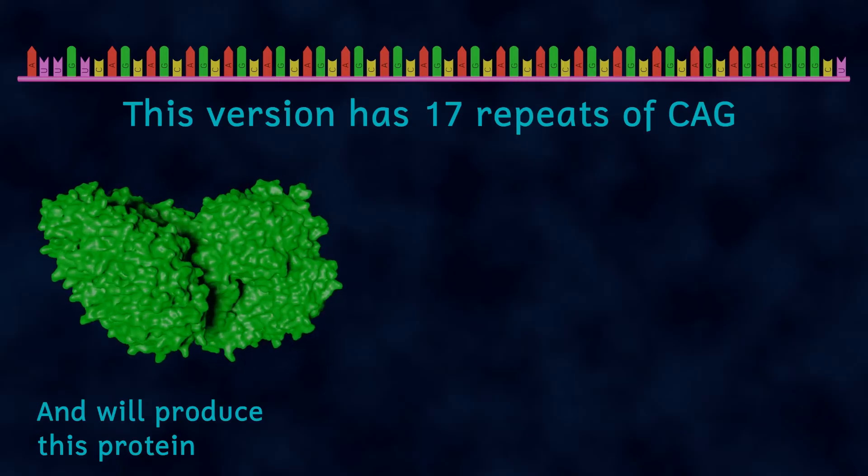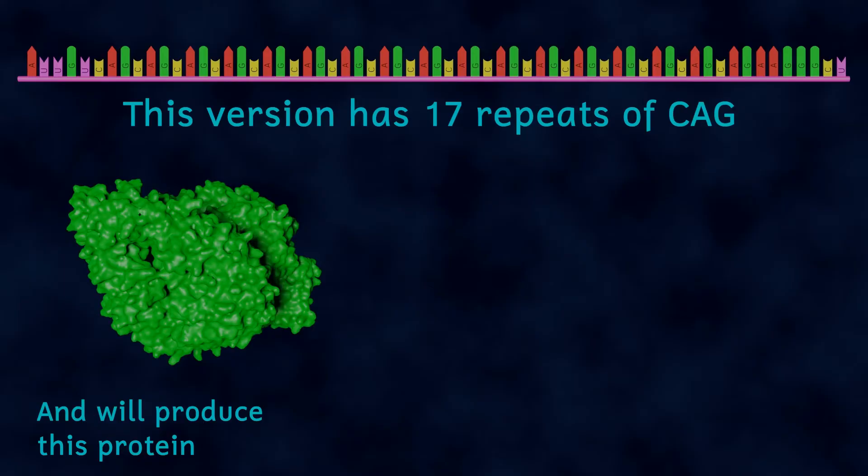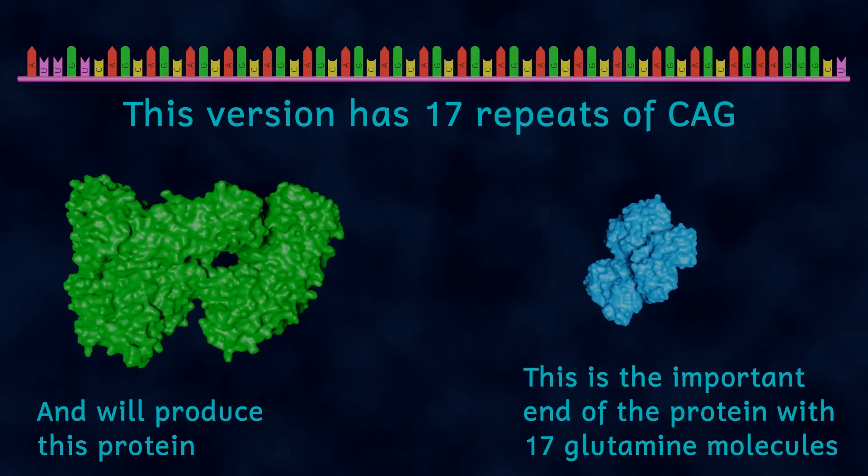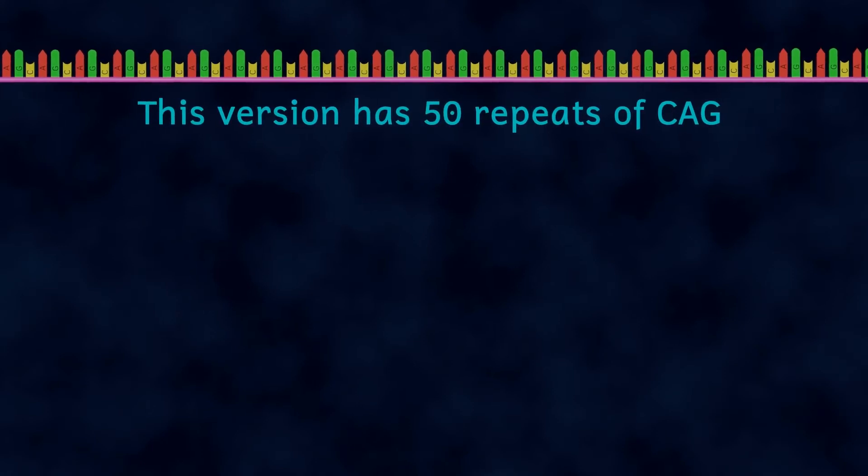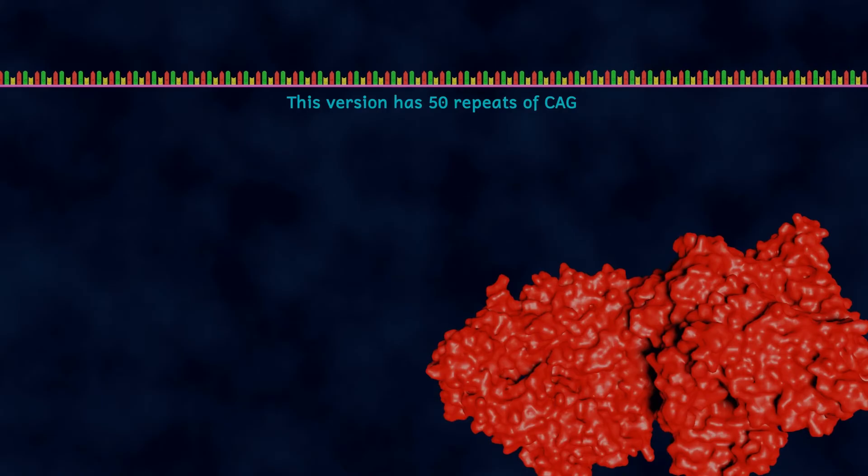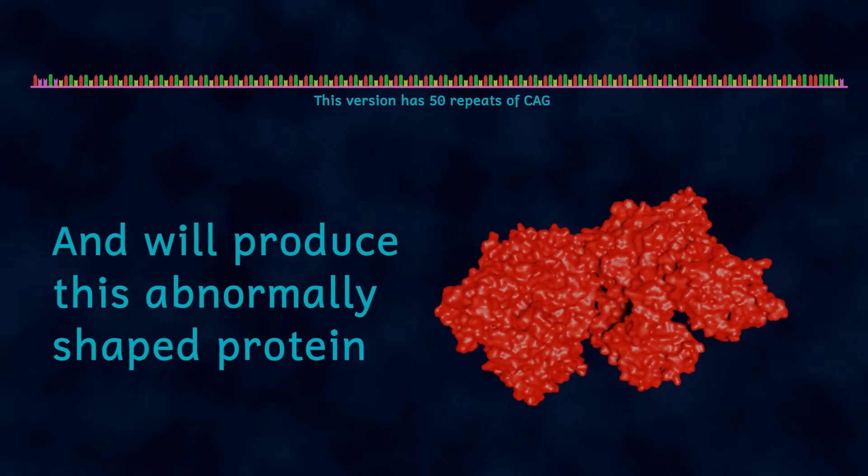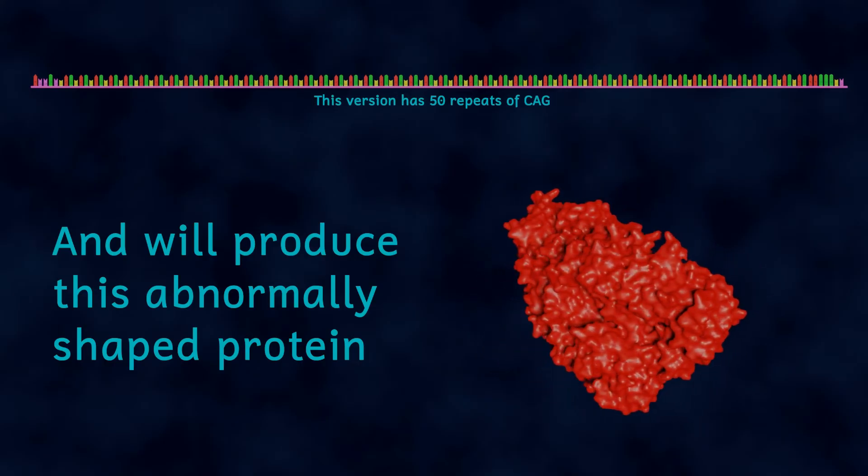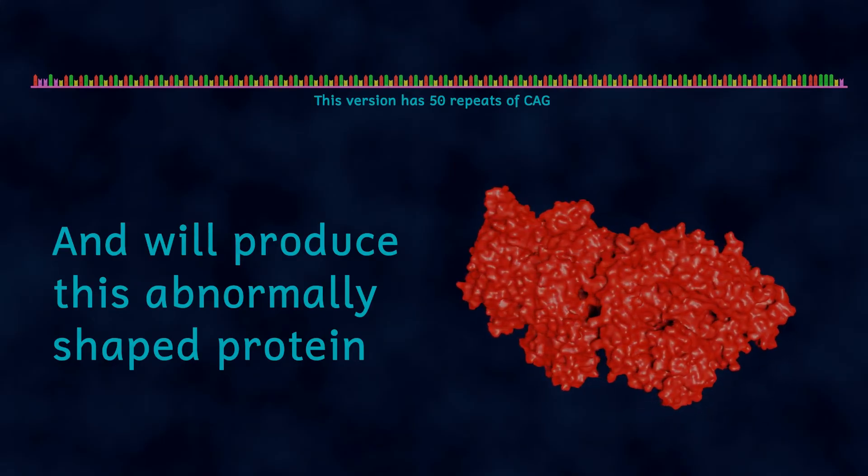And normally this gene contains between 10 and 35 repeats of this sequence which then means that the final Huntington protein contains between 10 and 35 glutamine molecules near the beginning of the chain. In someone with Huntington's disease they have extra repeats of that base sequence usually over 40 but it can be as high as 180 and this means that the Huntington protein has got an abnormal shape and so won't be able to do all of those important things that I've already spoken about. But unfortunately it's even more serious than that.